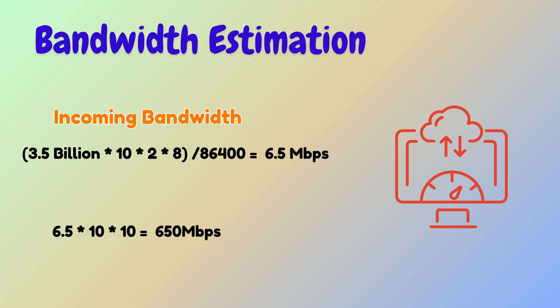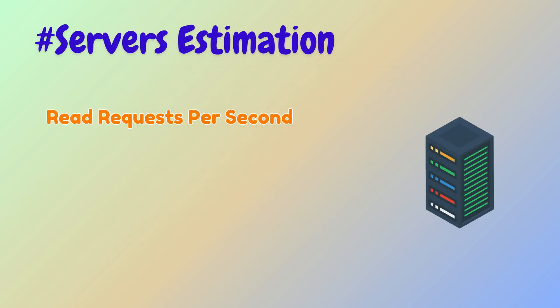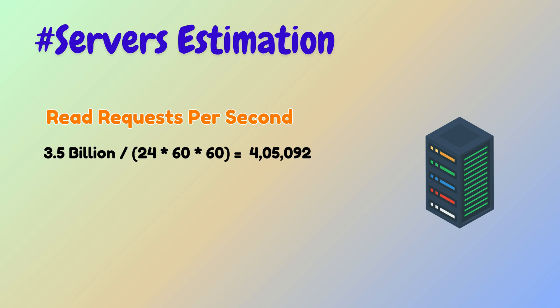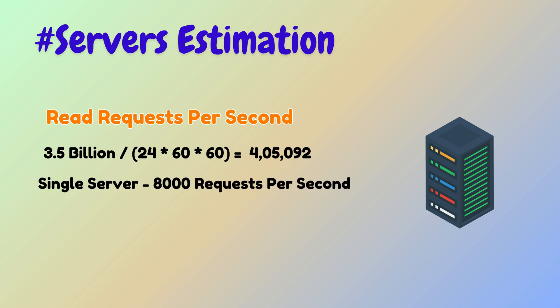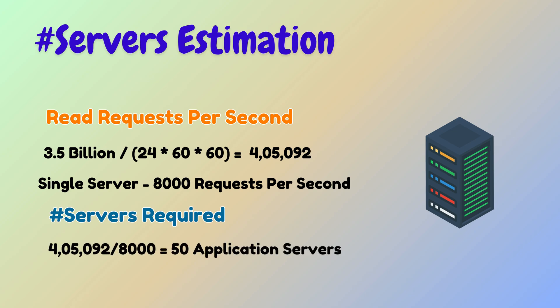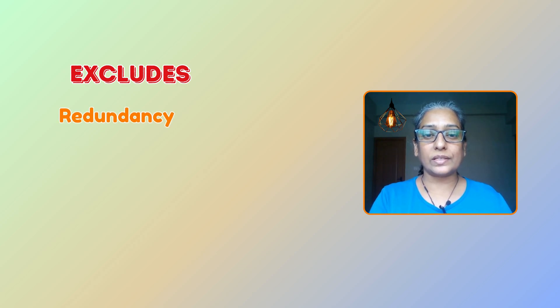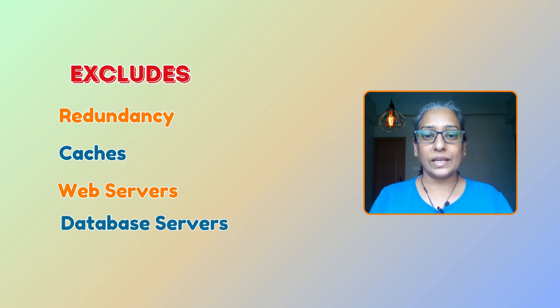Since our system supports 10 suggestions that are roughly the same length as the query, after each character is typed the outgoing bandwidth is 650 megabits per second. The total read requests per second is calculated as 3.5 billion divided by the number of seconds in a day, which is approximately 405,000 requests per second. Assuming a single server can handle 8,000 requests per second, we need approximately 50 application servers.